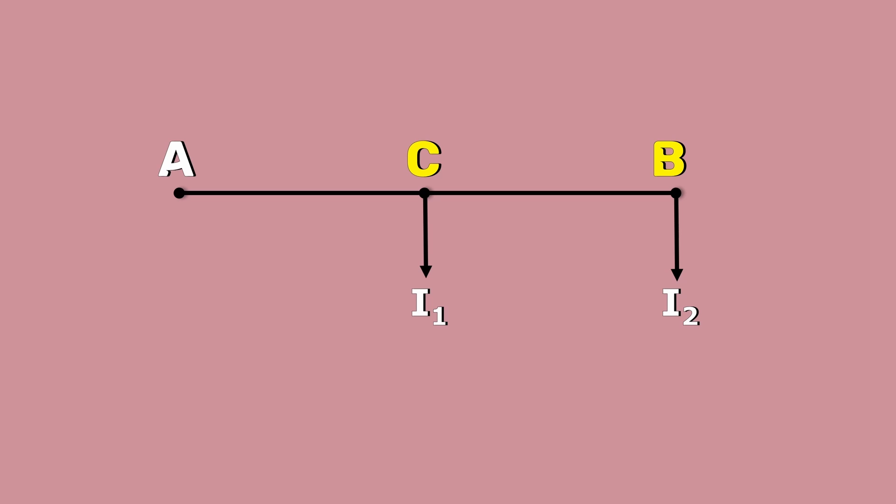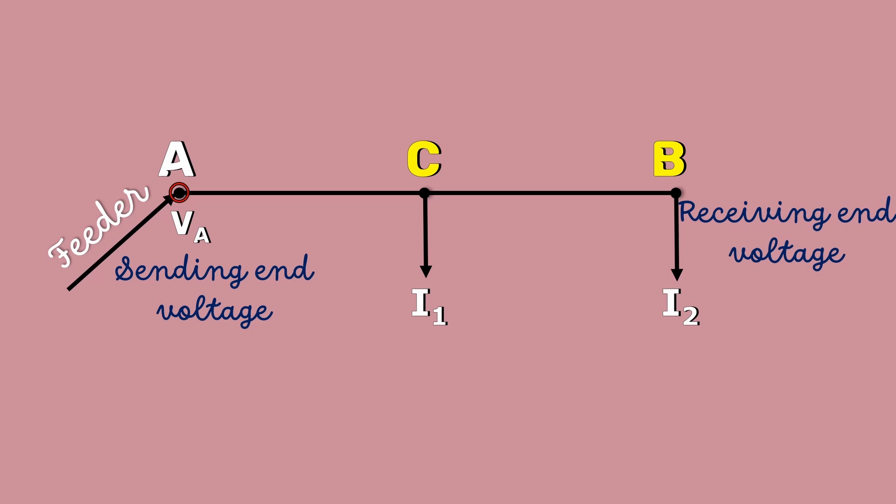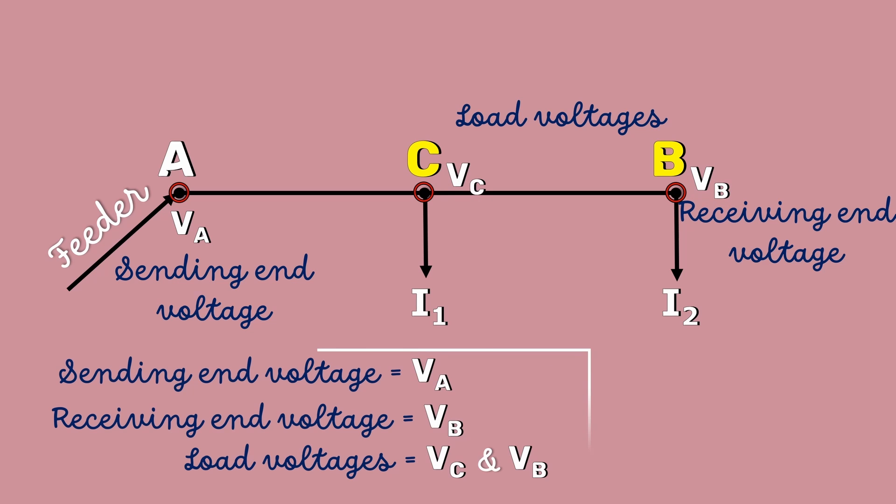The distributor is fed by a feeder. Here, the sending end voltage is the node voltage VA and the receiving end voltage is the node voltage VB. The load voltages are VC and VB.